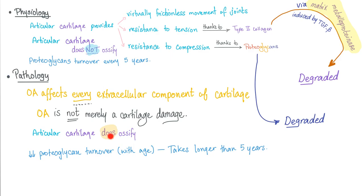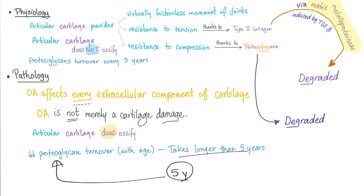For example, there is decreased proteoglycan turnover with age, which is bad. It takes longer — say more than 5 years — to regenerate your proteoglycans. If you're old, regeneration takes even longer, so you have decreased renovation or regeneration of proteoglycans.